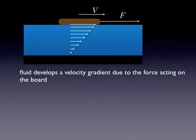What this does is sets up a velocity gradient because the top of the water moves along with the board, whereas the bottom of the water is stuck to the immovable ground. So the water at the top of the water column is moving. The water at the bottom of the water column remains stationary. So you get an increase in velocity as you move upward through the fluid. That's called a velocity gradient.